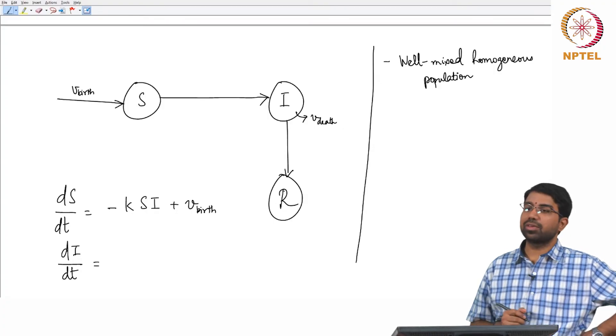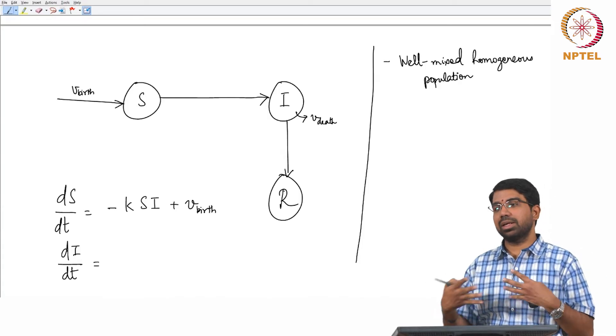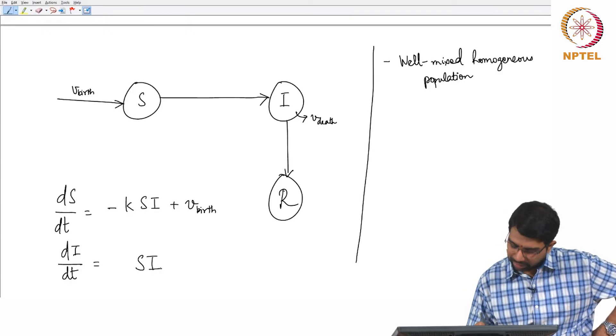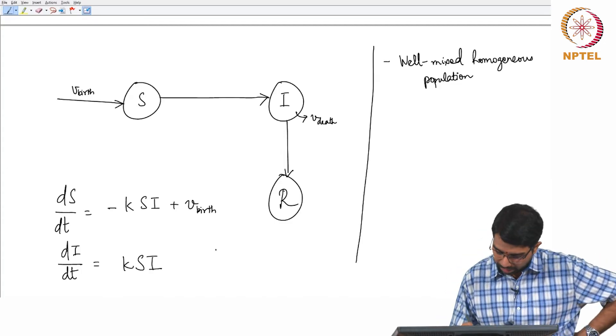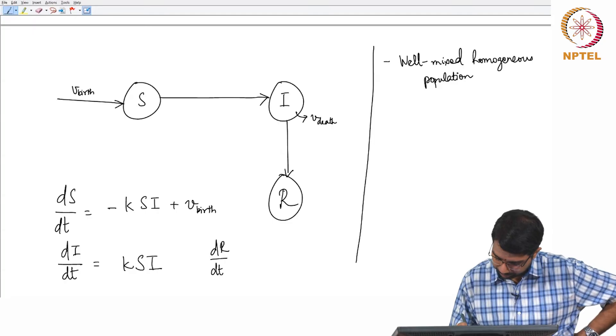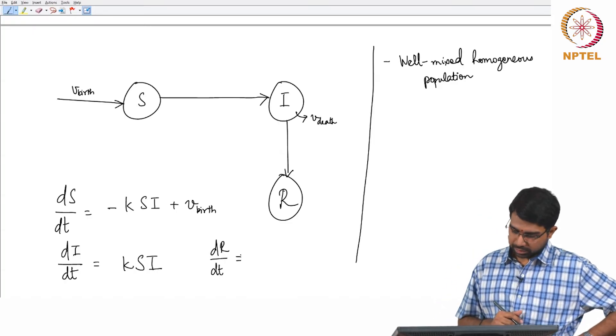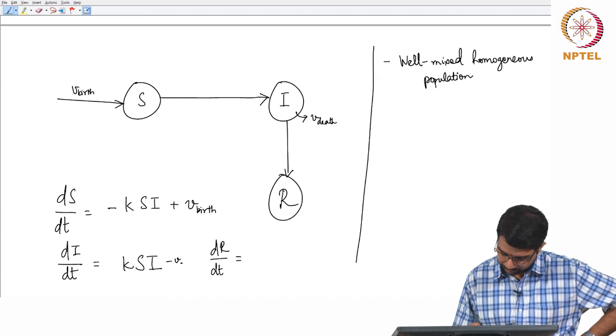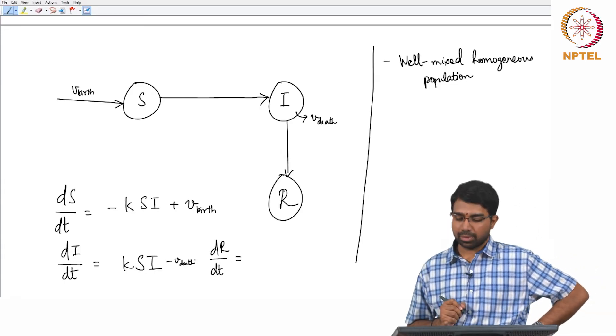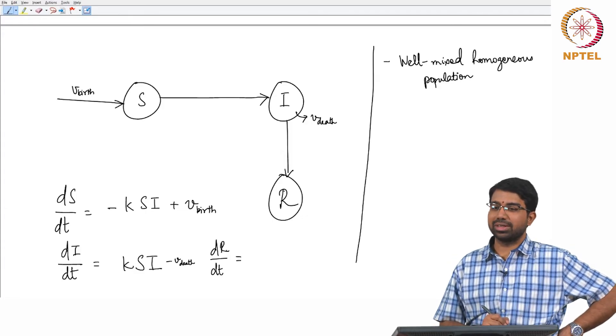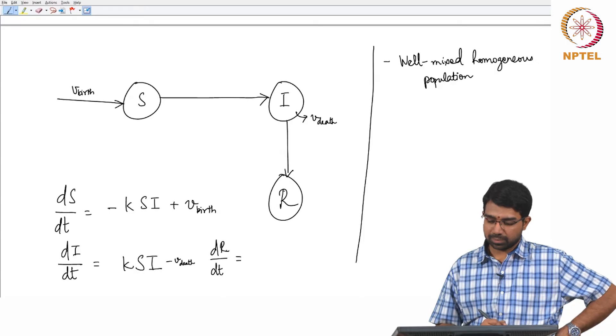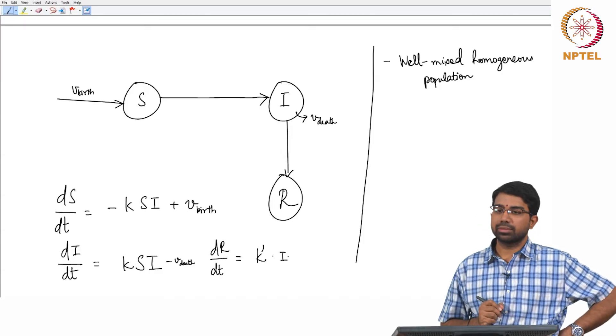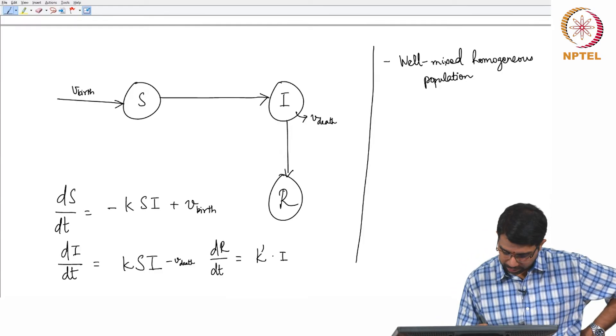Let us write out what is dI by dt. What is the rate at which people get infected? It will depend upon the interaction between susceptible and infected people. So it is going to be proportional to S and proportional to I connected by some constant. And dR by dt, it will have a minus v_death and so on.